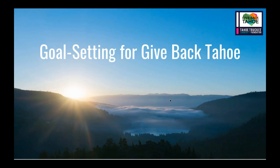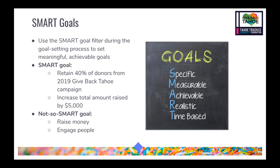Now we're going to talk about the strategic elements of your campaign. With any fundraising strategy, you first want to make sure you have a goal set in place. One of the best ways to set a goal is using the SMART goal method — setting a goal that's specific, measurable, achievable, realistic, and time-based. You don't want a goal that's broad or vague like 'raise money' or 'engage donors,' because those aren't attainable goals with clear action items.